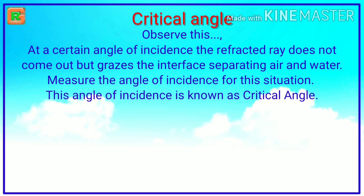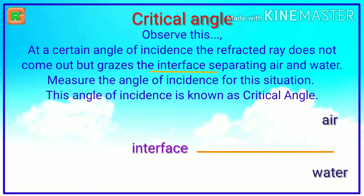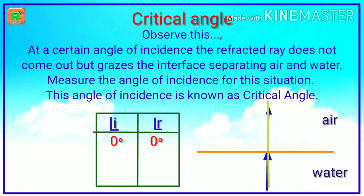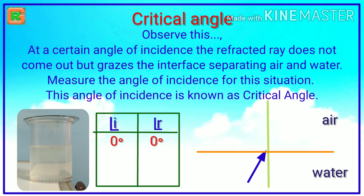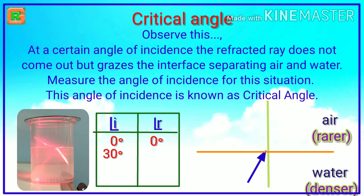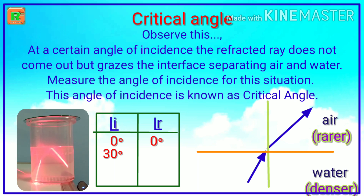Observe this activity. This is the interface separating air and water. Take an incident ray from water perpendicular to the interface at a particular point. Here, the angle of incidence is zero, so there is no refraction in the air. Now take the incident ray such that the angle of incidence is 30 degrees. As this refraction is from denser to rarer medium, the angle of refraction should be more than the angle of incidence. So let us assume the angle of refraction is 55 degrees.